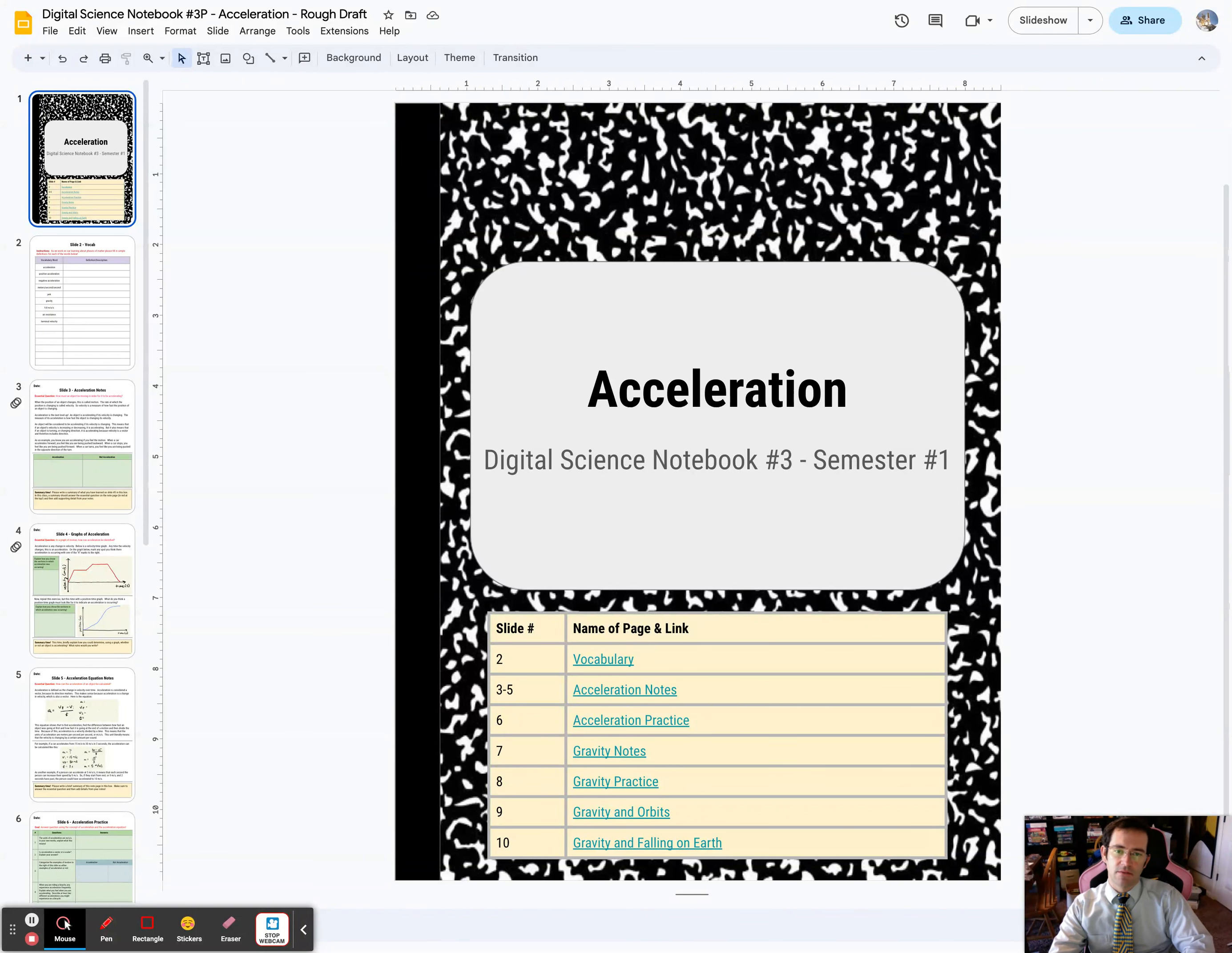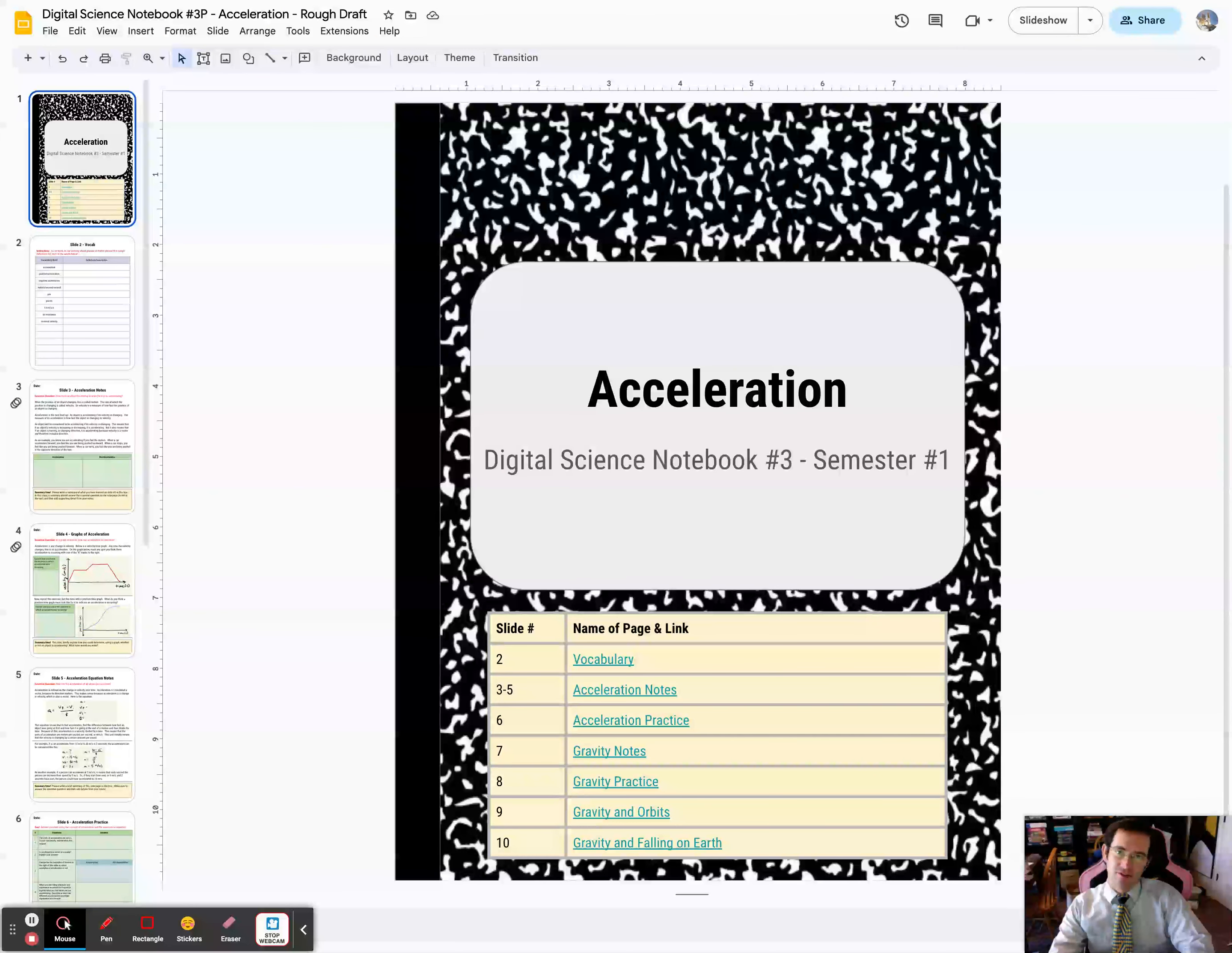Since we've already learned about things like speed, velocity, and position in the basic motion Digital Science Notebook, now we need to look at something called acceleration, which is when how fast you're moving changes. It's how fast you're changing how fast you're moving.